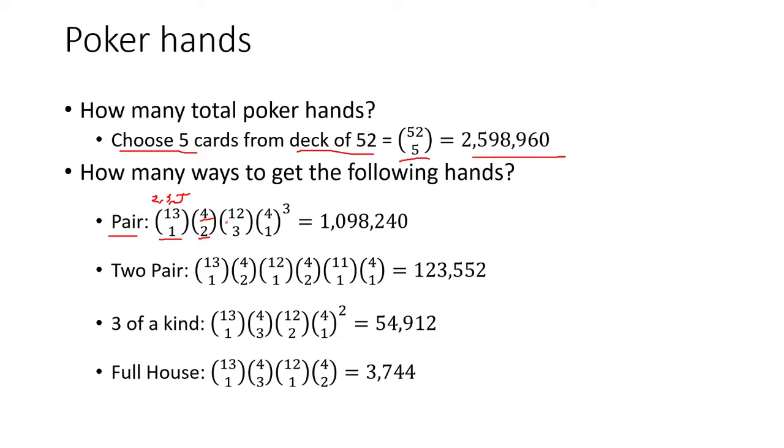Next we choose the remaining cards. So that'll be 12 choose 3. And then we're going to choose a suit for each one of those. So there's 4 possible options to choose from. And then we have 1 suit per card. And then we repeat that 3 times. And that'll get us around a million.